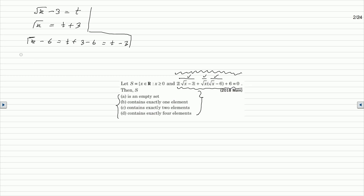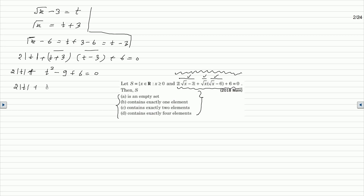The equation becomes: 2|t + 3| + (t + 3)(t - 3) + 6 = 0. Using the (a+b)(a-b) identity, (t+3)(t-3) = t² - 9. So the equation simplifies to: 2|t| + t² - 3 = 0.